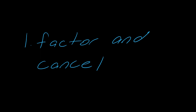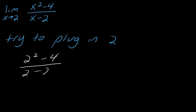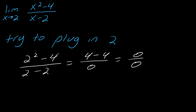The first trick is to factor and cancel. This is actually an example I've talked about in another limits video. How do you know you need this trick? Just try plugging in — when you plug in 2, you get 4 minus 4 over 0, so you get 0 over 0.